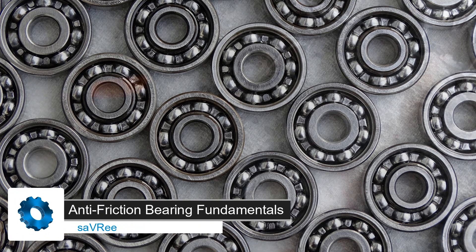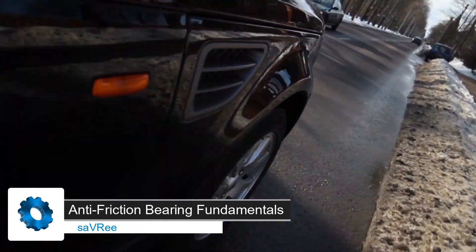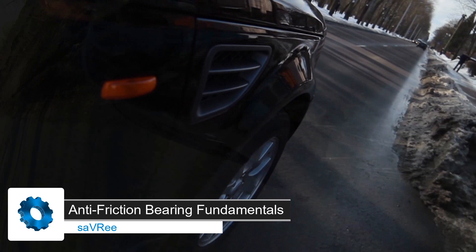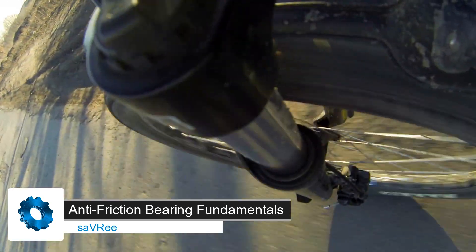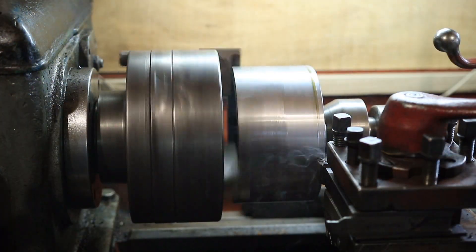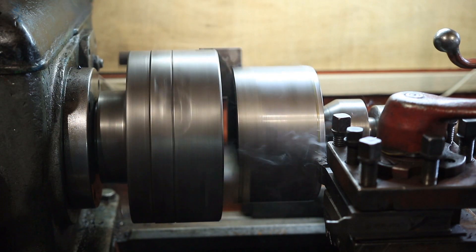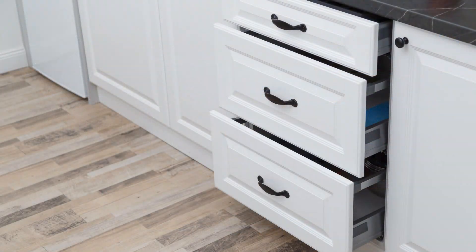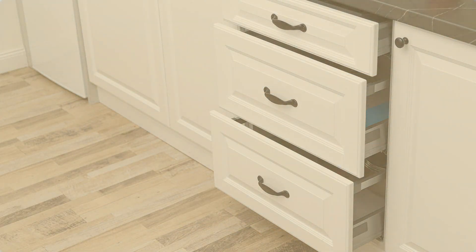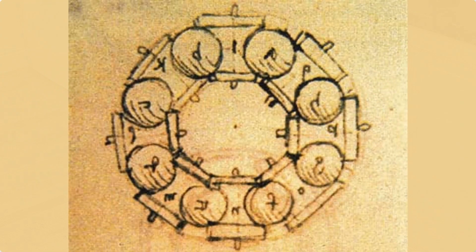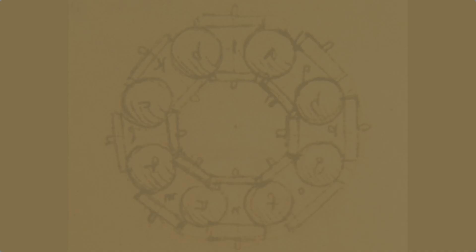Bearings are everywhere. We use them in cars, bicycles, motors, and even for things like kitchen drawers. Humans have been using anti-friction bearings for thousands of years. But what are they? Why are there so many different types? And why is it good for every engineer to know a bit about them?